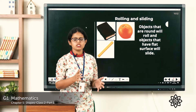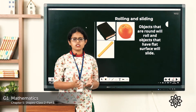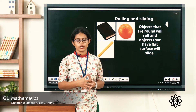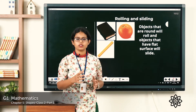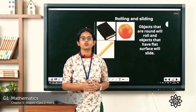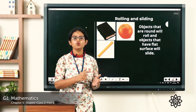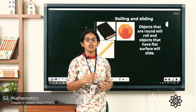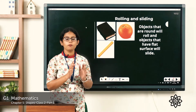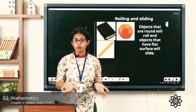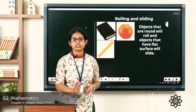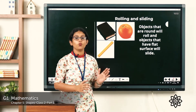Next, let's see what is rolling and sliding. What things can roll and what things can slide? Let me give you some examples. Let's take a ball and place it on a table. What happens? It starts rolling down the table. Why? Because it is round in shape. So things which are round in shape will roll. Now suppose you place a book on your table. When you push it, will it roll? No, it will slide. So things which are flat will slide.